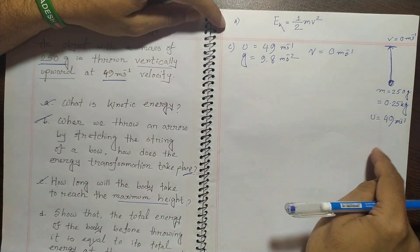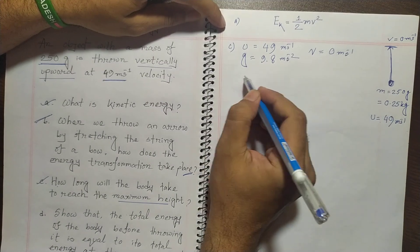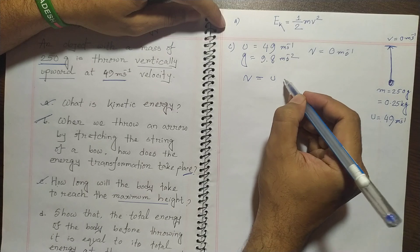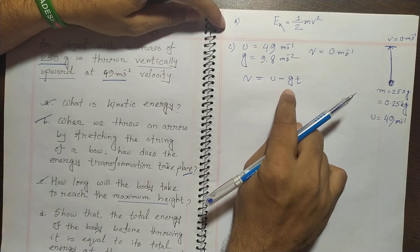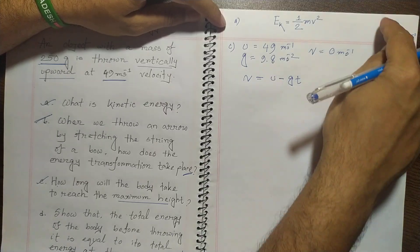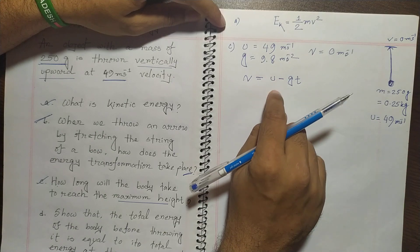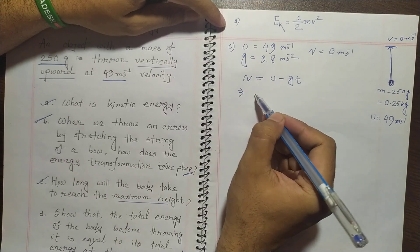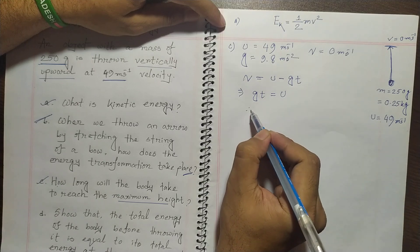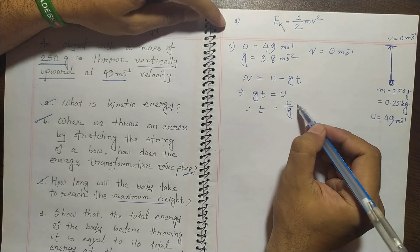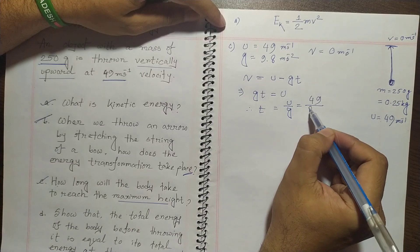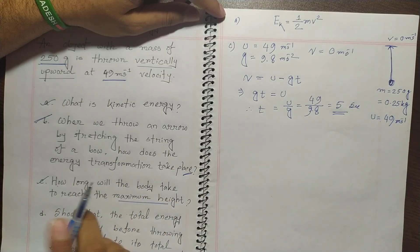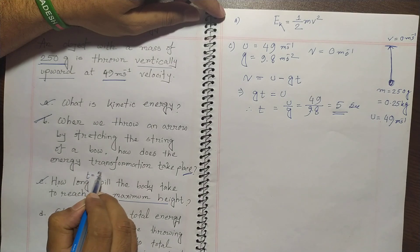Let the time taken to reach maximum height be T. We use the principle V equals U minus gT. Since V is 0, we get gT equals U, so T equals U divided by g. Dividing 49 by 9.8 gives T equals 5 seconds.